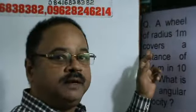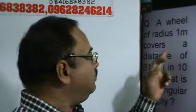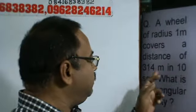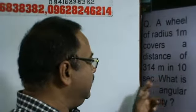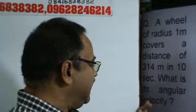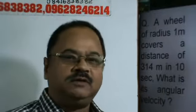In this problem, a wheel of radius 1 meter covers a distance of 314 meters in 10 seconds. What is its angular velocity?